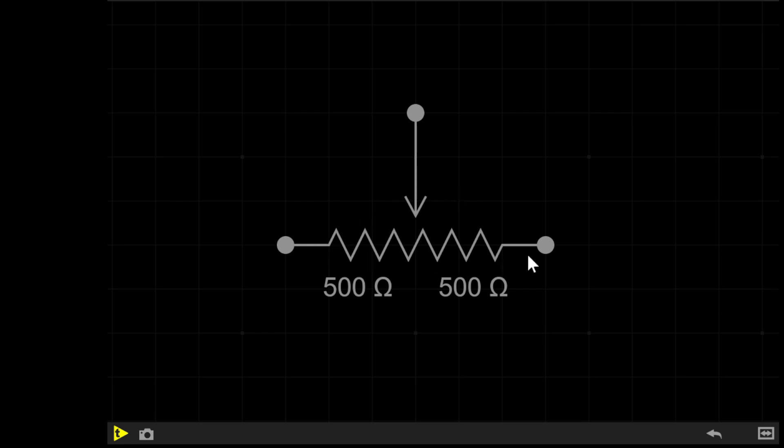A potentiometer in general is made up of a long resistive element here, with a metal wiper that can move along to create different resistance values.